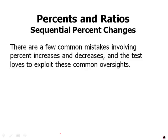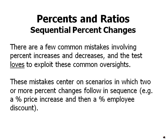Sequential percent changes. This topic is about when we have percent increases and decreases following each other — when you combine percent increases and percent decreases. There are a few common mistakes involving percent increases and decreases, and the test loves to exploit these common oversights. These mistakes center on scenarios in which two or more percent changes follow in a sequence.